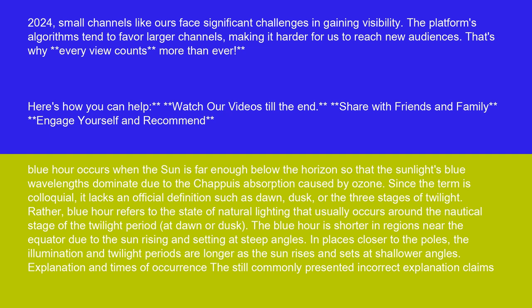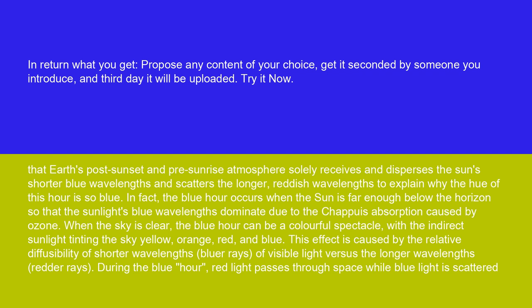A commonly presented incorrect explanation claims that Earth's post-sunset and pre-sunrise atmosphere solely receives and disperses the sun's shorter blue wavelengths and scatters the longer, reddish wavelengths, to explain why the hue of this hour is so blue. In fact, the blue hour occurs when the sun is far enough below the horizon so that the sunlight's blue wavelengths dominate due to the sharp absorption caused by ozone.